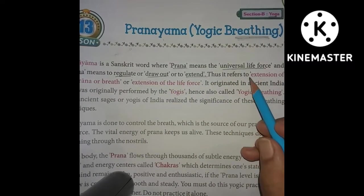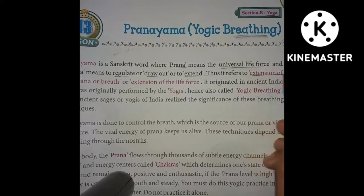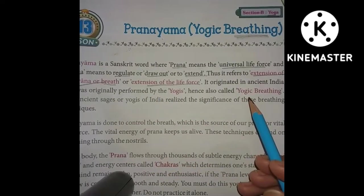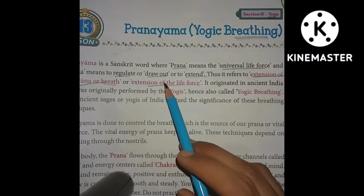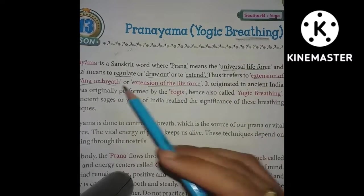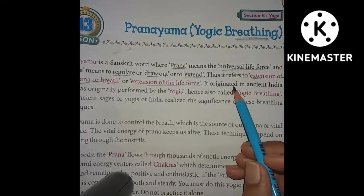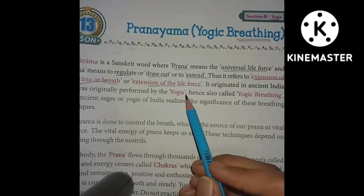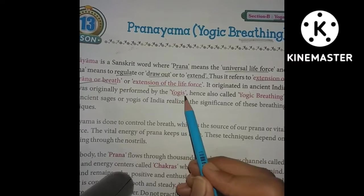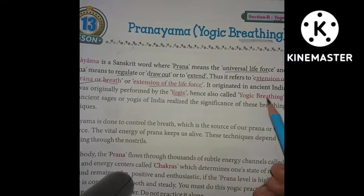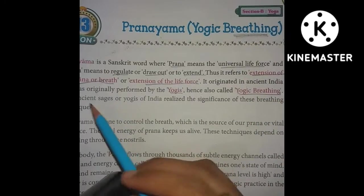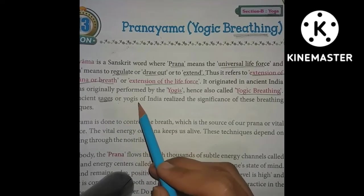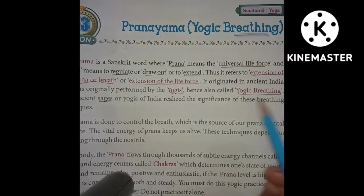Thus pranayama refers to the extension of the pran, or breath, or extension of the life force — meaning to extend and draw out one's breath. It is originated in ancient India and was originally performed by the yogis, hence it is also called yogic breathing. The ancient sages or yogis of India realized the significance of these breathing techniques.